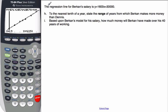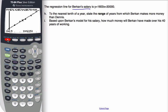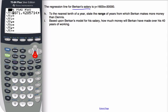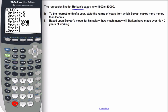Last two questions. Now it says the regression line for Birkin's salary is this equation. To the nearest tenth of a year, state the range of years from which Birkin makes more money than Dennis. I have my calculator, of course. I'm going to turn off the dots and I'm going to graph Birkin's salary here, which is 1,600X plus 30,000. Let's see here, my window, I want to make sure I get my Y-intercept. I'm going to change it just a bit. I'm going to make this 30,000 and we'll make this a little bit higher, let's say 60,000. We'll even change our Y-scale, make it 10,000s.